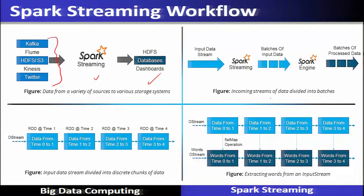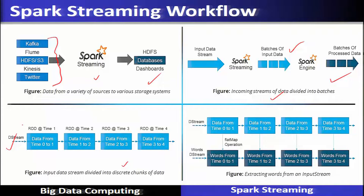Incoming data streams are divided into batches of input data, which are given to the Spark engine for computation. The input data stream is divided into discrete chunks of data. The streams handled by Spark streaming are called Discretized Streams, or DStream.